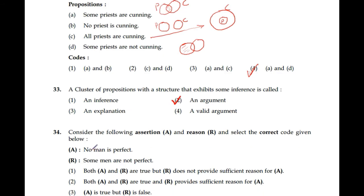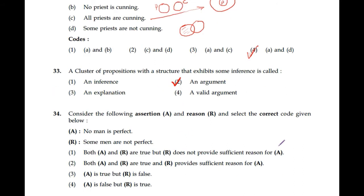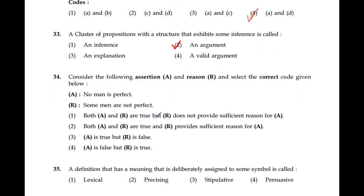Question number 34: Consider the following assertion and reason — 'No man is perfect'; 'Some men are not perfect.' The correct option is 1: both assertion and reason are true but R does not provide sufficient reason for assertion.